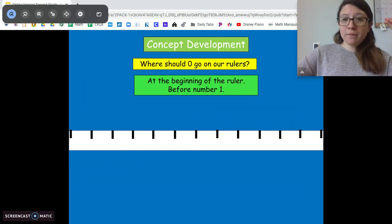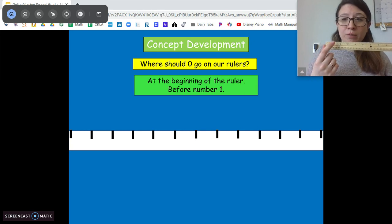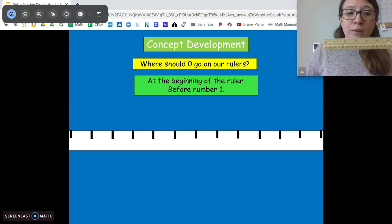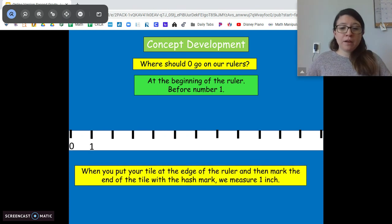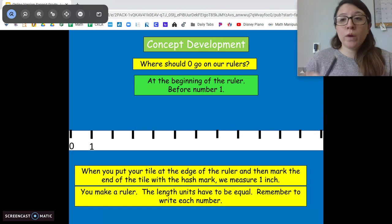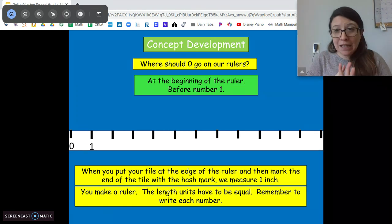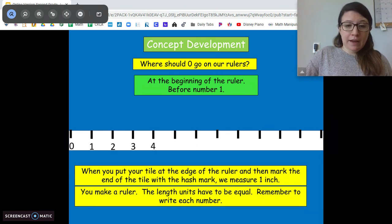The zero is going to start at the very end. We do not start with zero on our numbers. This first mark is always going to be one. Zero is down here. So we're going to keep going all the way up to measure out our ruler. Remember when we're measuring each of the marks has to be equal. If they're not equal, we will not get an accurate measurement.